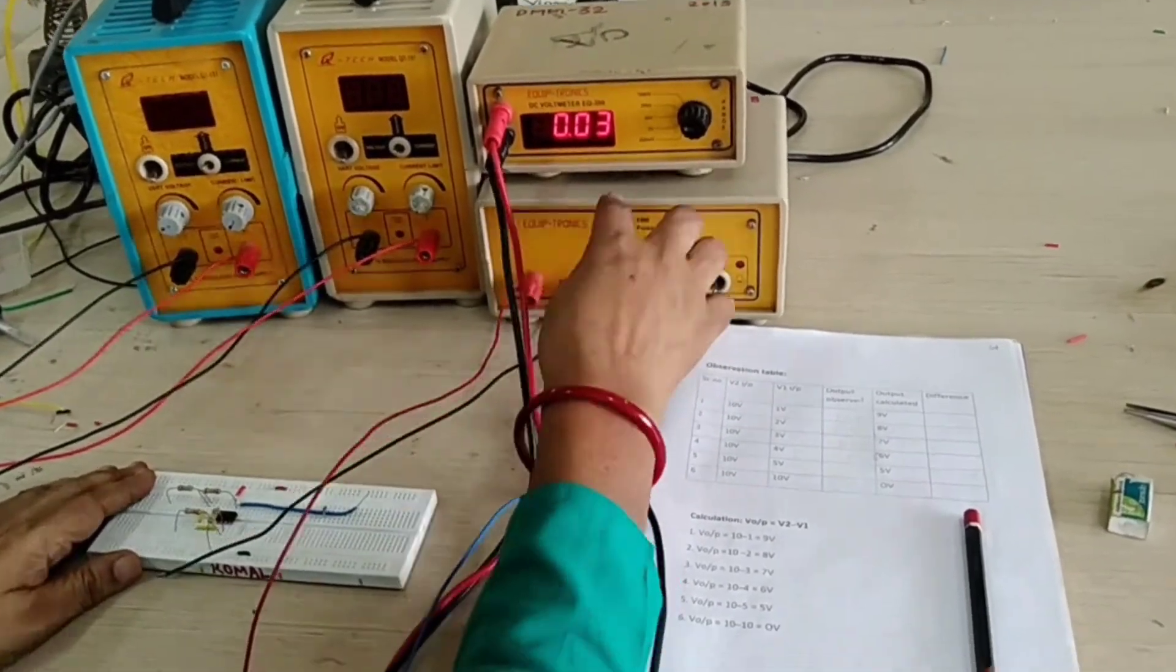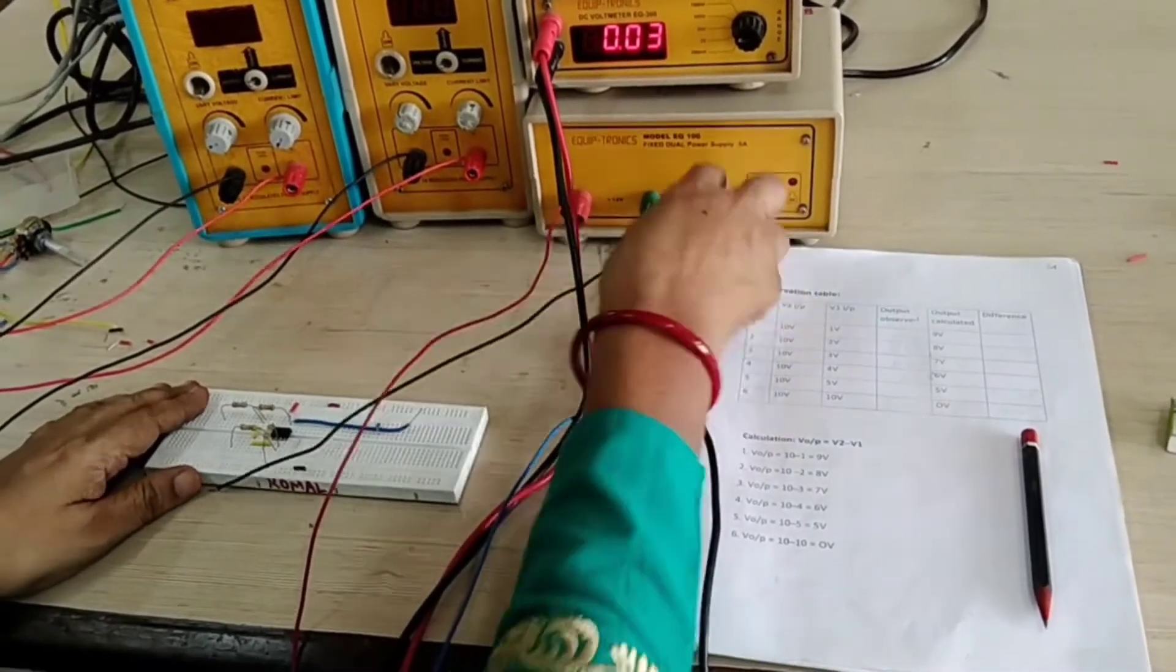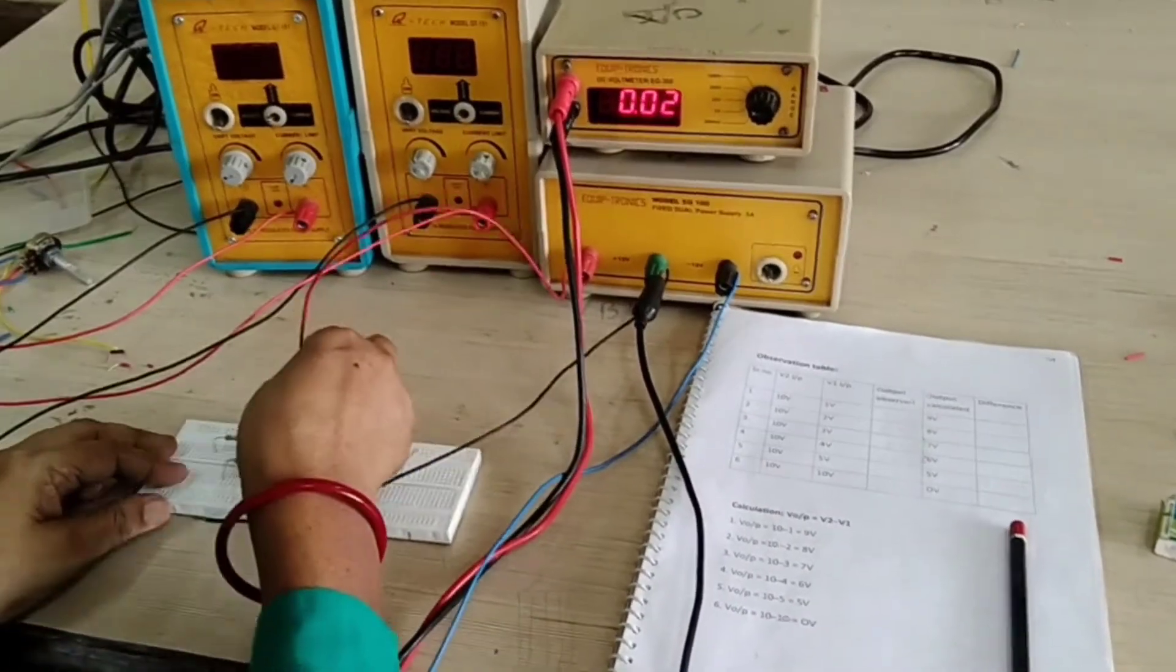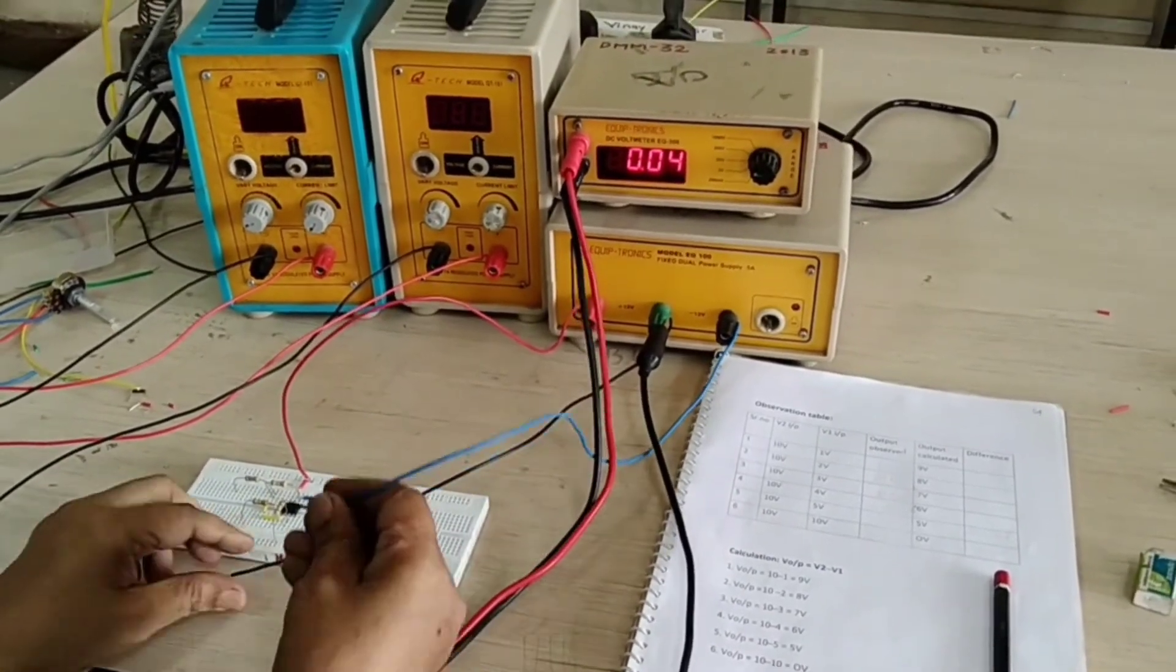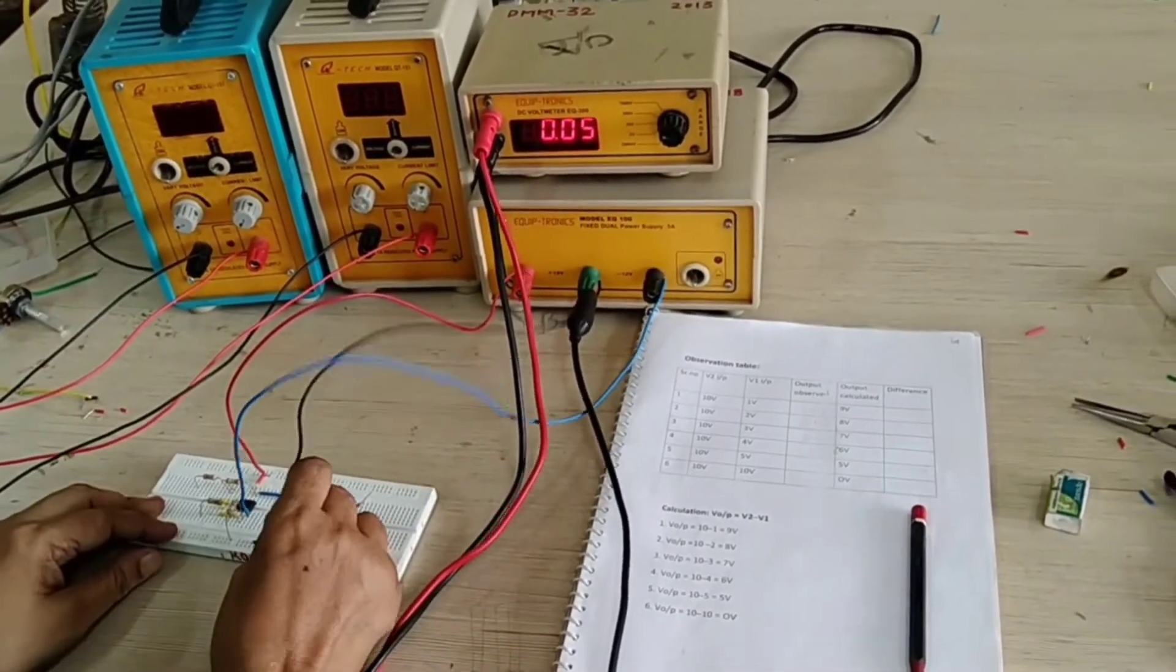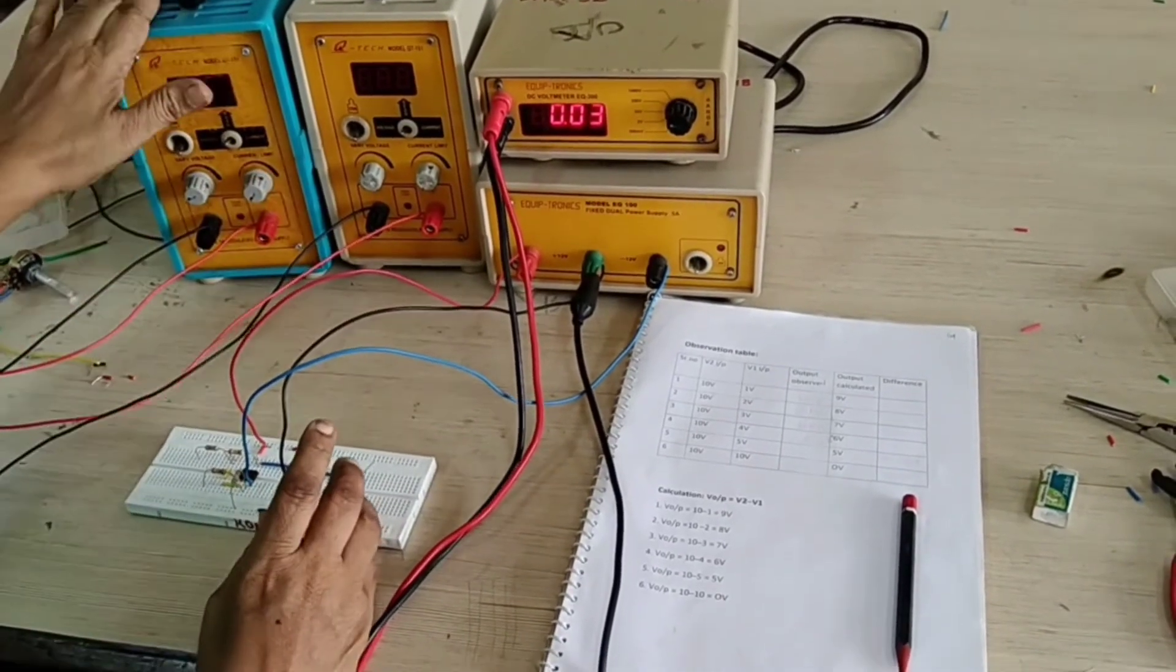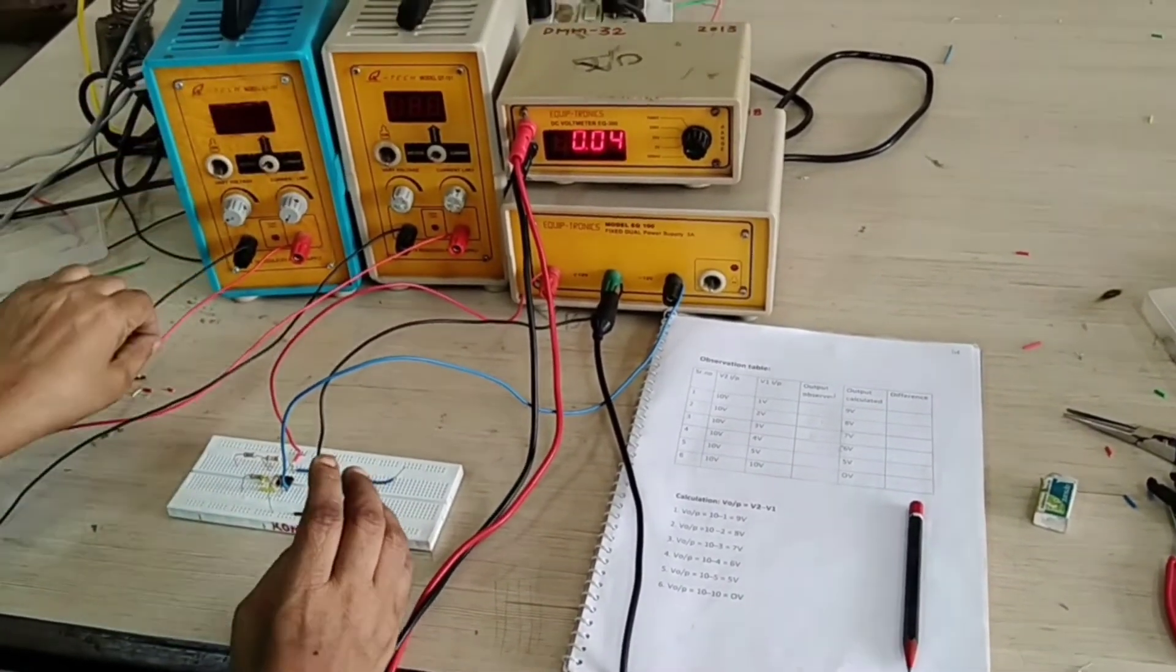This is a dual power supply plus 12 minus 12. Plus 12 we are connecting pin number 7 and minus pin number 4 and this is your common ground black.